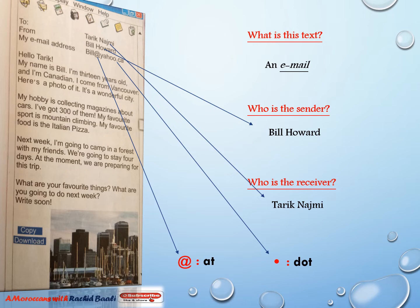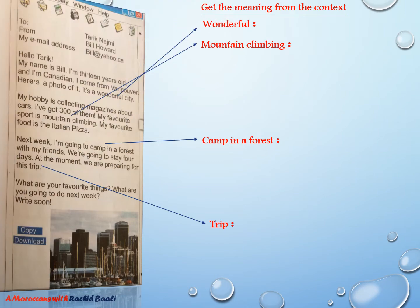Let's try to read the email address now: it's bill at yahoo dot ca. Now let's try to train ourselves to understand the meaning of some words from the context.